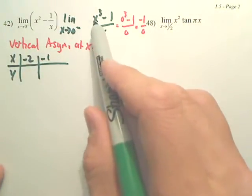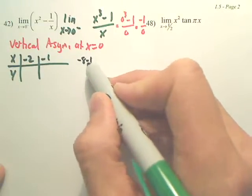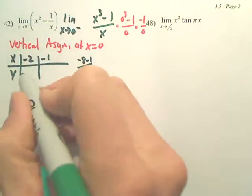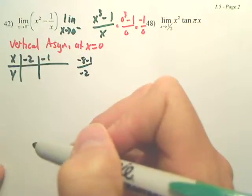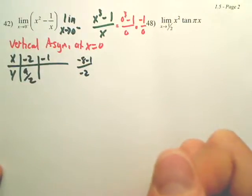negative two cubed is going to be negative eight minus one over negative two, which gives us positive nine over two.